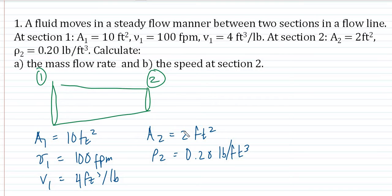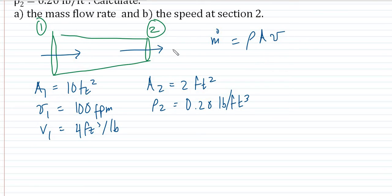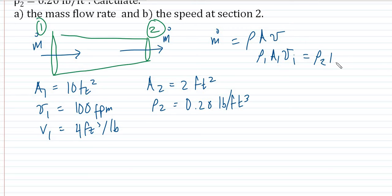By conservation of mass, the mass at section one should be the same mass that exits at section two. By that definition, the formula for mass flow rate is simply ρ₁A₁V₁. Translating that to sections one and two, knowing that the mass flow rate at section one equals the mass flow rate at section two by conservation of mass, we have: ρ₁A₁V₁ = ρ₂A₂V₂. Let's apply these concepts to our problem.